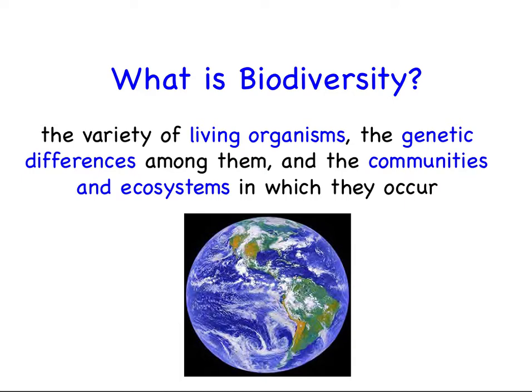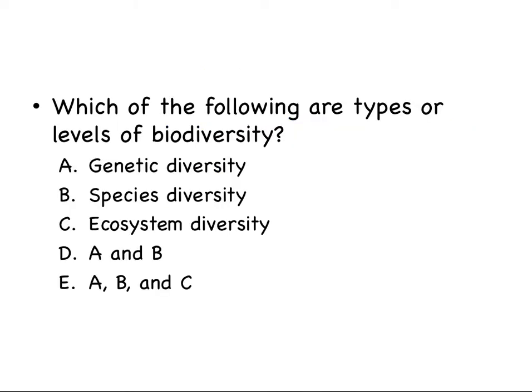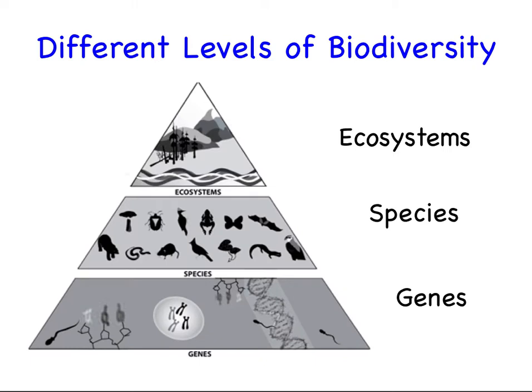The blue parts of this definition refer to the levels of biodiversity. So here's your first question — remember to write these down and pause if you need to. Which of the following are types or levels of biodiversity? The levels of biodiversity also correspond with different levels of biological organization. They can overlap in spatial scale depending on the question being asked. There are three different levels: ecosystem diversity, species diversity, and genetic diversity.